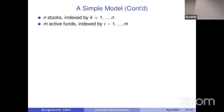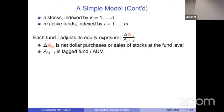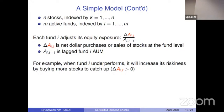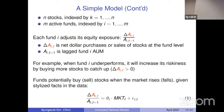In this world, there are multiple stocks indexed by K and multiple active fund managers indexed by I. Each fund will adjust its equity exposure over time, where delta A is net dollar purchases or sales of stocks at the fund level divided by the lagged fund AUM. For example, if I'm a fund manager who underperforms, I will increase the riskiness of my portfolio by buying more stocks, so delta A will be positive. I model the direction of stock trading as a function of contemporaneous stock market returns as equation number one, where theta is a parameter to be estimated that turns out to be positive, consistent with pro-cyclical risk-taking behavior.